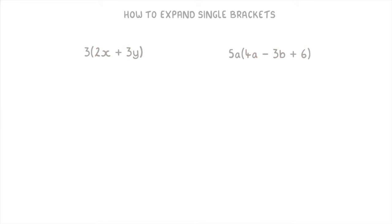If we start with this first question on the left, what this expression really means is that we have three sets of the 2x plus 3y. So to work this out, one way of doing it would be to just add together three sets of the 2x plus 3y: so 2x plus 3y, plus 2x plus 3y, plus another 2x plus 3y.